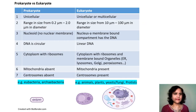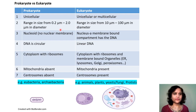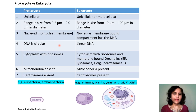Prokaryotes are almost always unicellular, whereas eukaryotes can be unicellular or multicellular. Prokaryotes are rather small, ranging from 0.2 microns to about 2 microns in diameter. They have a nucleoid with no nuclear membrane, and the DNA is usually circular, surrounded by cytoplasm which has ribosomes. Mitochondria and centrosomes are absent. Examples are eubacteria and archaebacteria.